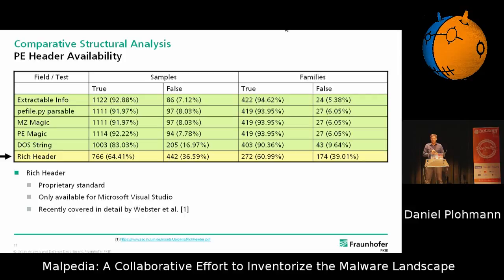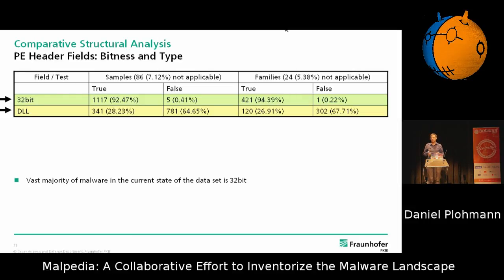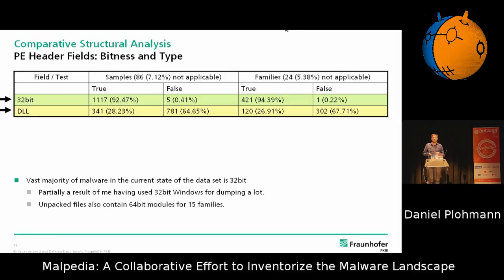Rich headers are a bit less common — you'll only find them across all families in around about 60% of cases. It's a proprietary standard by Microsoft that basically encodes how many times things have been compiled with Microsoft Visual Studio, and also with the different versions of Visual Studio that may have been present on the system over time. There's a paper from DIMVA this year that goes into more detail about that. The next thing: say we have a PE header — the vast majority is 32-bit images. One reason is that I've been using 32-bit Windows a lot. But for about 15 families you would find they also have 64-bit modules — some of the more modern bankers like Dridex, Trickbot — dynamically deciding which module to use. And what was a bit surprising to me, almost every fourth family basically has their main module as a DLL opposed to an EXE file.